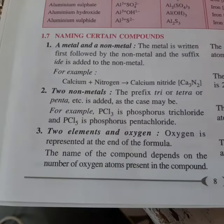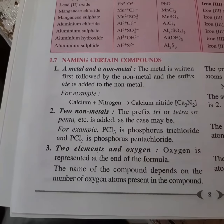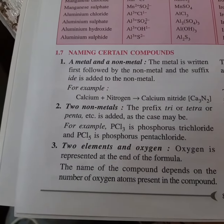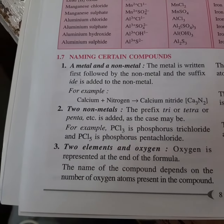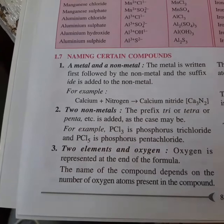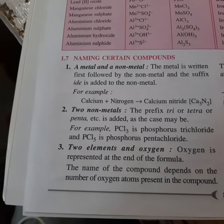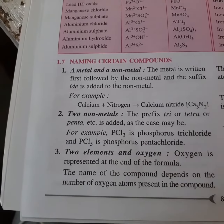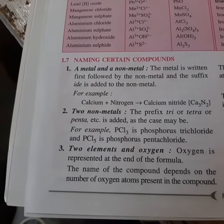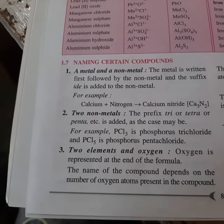Now, in some cases, the same non-metal is present with a metal more than two times — chlorine is present 3 times, 4 times. In such cases, we use numerical prefixes. For example, carbon monoxide is when one oxygen is there, but if there are two oxygens, we call it carbon dioxide.